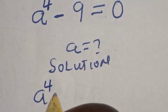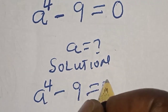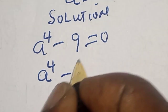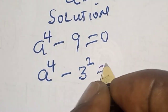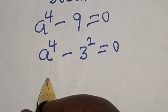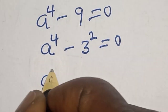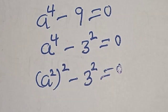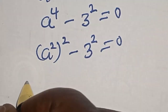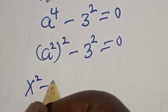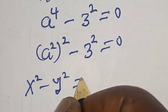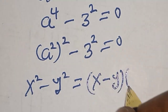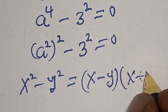a raised to power 4 minus 9 is equal to 0. We can write a raised to power 4 minus 9 as 3 squared, equal to 0. And a raised to power 4 is the same thing as a squared, squared minus 3 squared, equal to 0. This is the difference of two squares. That is, s squared minus y squared is equal to s minus y, multiplied by s plus y.